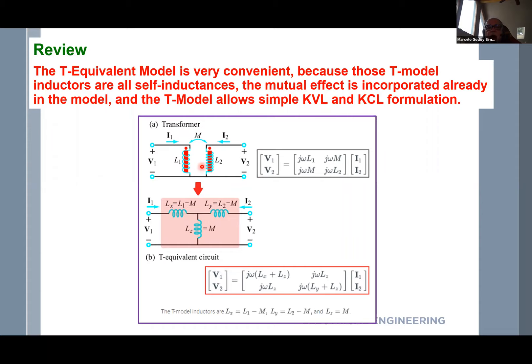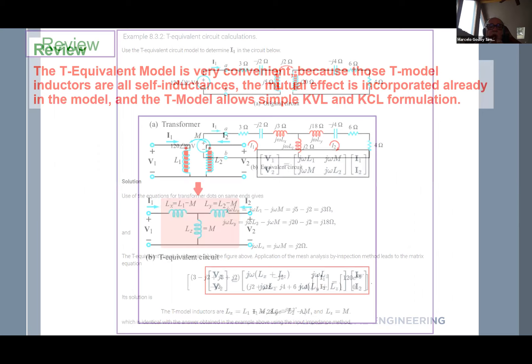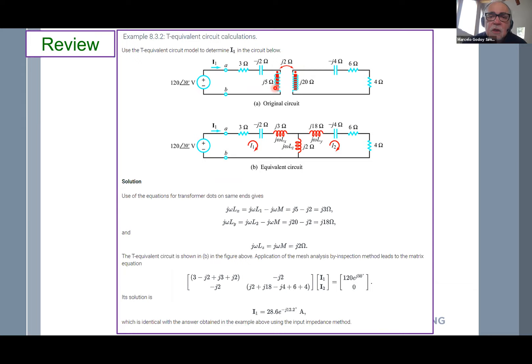The original coupled-inductor model is more difficult to simulate unless the circuit simulator supports mutual coupling. The T equivalent model is the most recommended approach. Its voltage and current equations are equivalent — your V1, I1, V2, and I2 will have the same solutions. Here we have a problem illustrating how to apply the T model, with mutual M placed from the center node to ground.